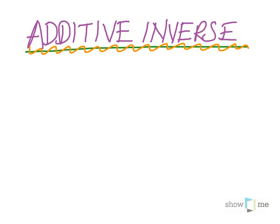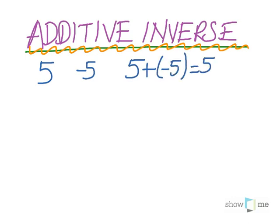If you add a number and its additive inverse, you get zero. Like if you have 5, the additive inverse is -5 because when you add them you get 5 + (-5), which is 5 - 5, which is 0. So -5 here is the additive inverse of 5.